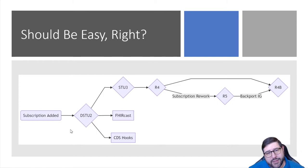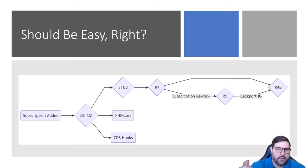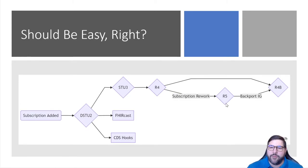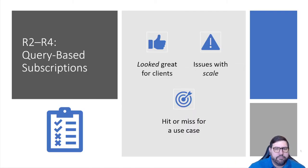All this was happening during DSTU2 and STU3, and then R4 came along. Around 2019, people realized that the actual subscription part had some holes, so they pushed the big red button and said let's redesign subscriptions for R5 — which was a great project still getting minor updates. Then people said they also needed an R4 solution, so a backport IG was started. Then HL7 announced FHIR R4B, which gave the option to add some new resources to make it work a lot better. What was in R2 through R4 was query-based subscriptions, where a client could say: here's a query, tell me when the result set changes.